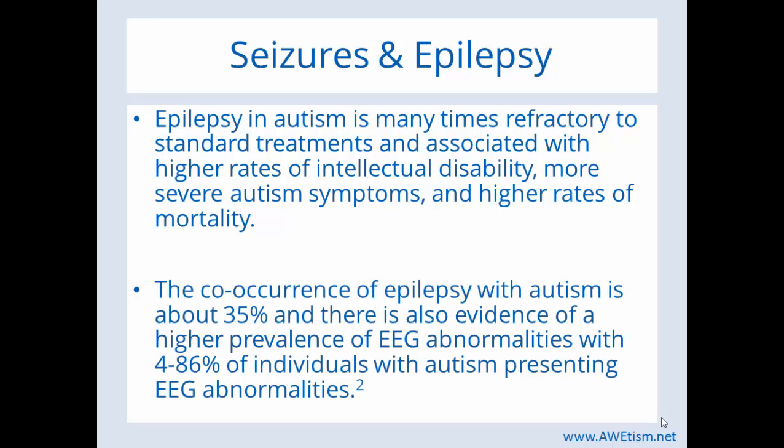The co-occurrence of epilepsy with autism is about 35%. There's also evidence of a higher prevalence of EEG abnormalities — about 4% to 86% of individuals with autism present EEG abnormalities, meaning the electrical charges in their brain are abnormal at times.